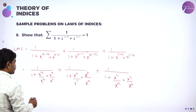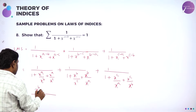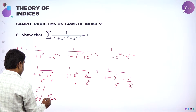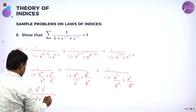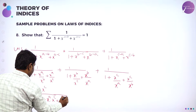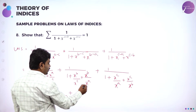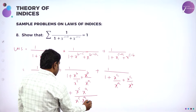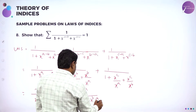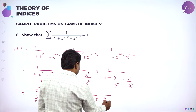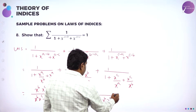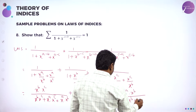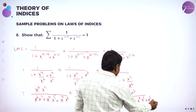Now simplify this. Taking LCM, it will become x^b·x^c divided by (x^b·x^c + x^a·x^c), and taking LCM for the second term gives x^a·x^c plus x^a·x^b. For the third term the products x^c·x^a go up, divided by x^c·x^a plus x^b·x^a plus x^b·x^a.